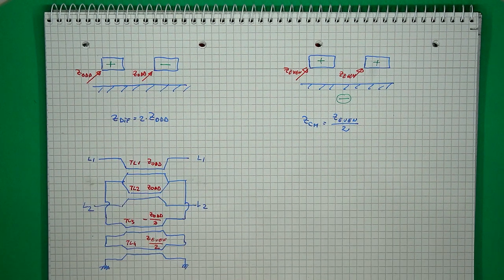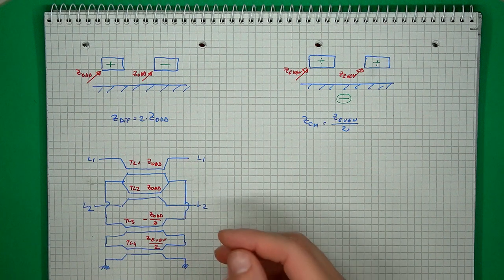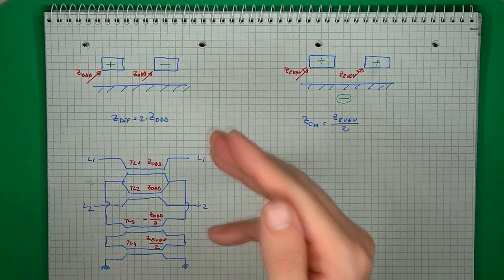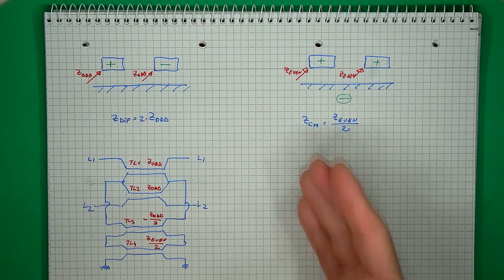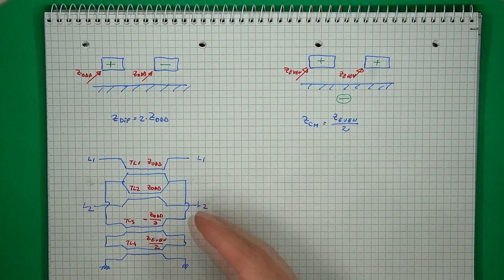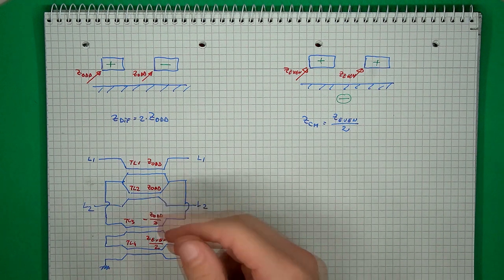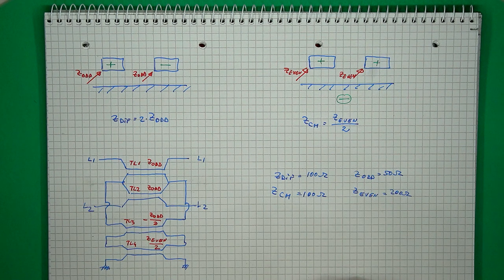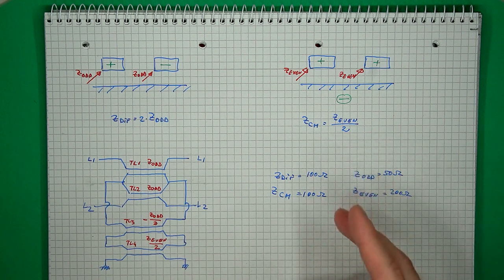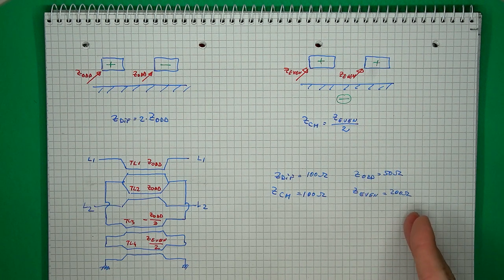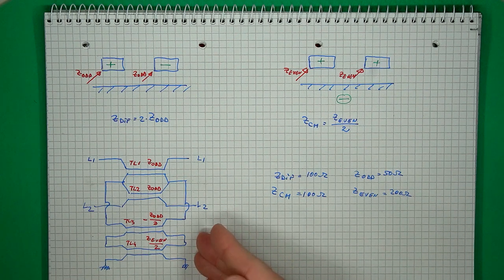You could convert these to the structure we looked at previously, but another interesting model for a differential transmission line uses four transmission line pairs, with all values derived from the odd and even mode impedance. Because this is a theoretical model used only in a circuit simulator, there is absolutely no issue using negative impedance values. To recreate the initial model with 100 ohms of both differential and common mode impedance, we can calculate the odd and even mode impedance and use those values.